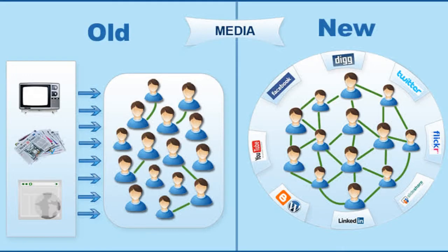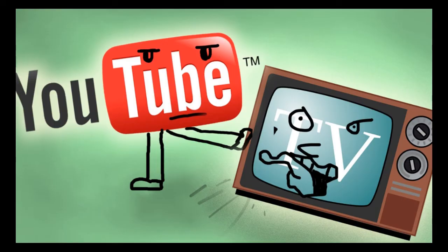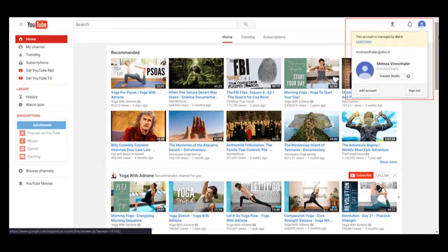New media, such as digital media, has rapidly accelerated globalization in that information can be shared in multiple different directions. For example, comparing old media like TV to new media like YouTube: TV allows a person just to receive and consume information, but YouTube allows the same person not only to receive, but also to create content and share and interact with others using that same content.